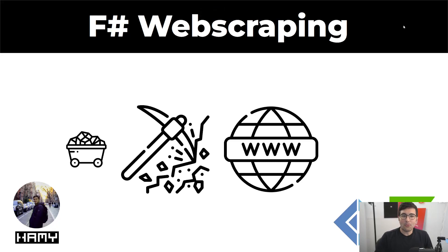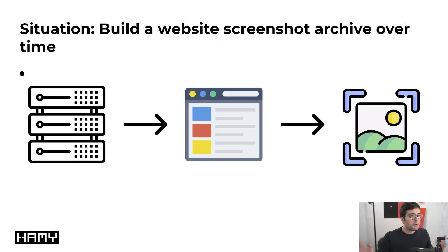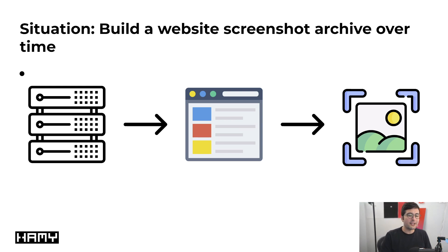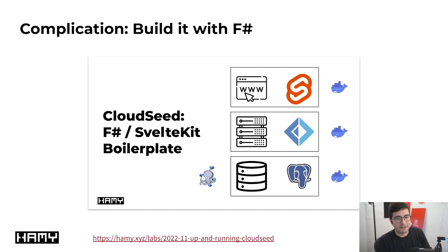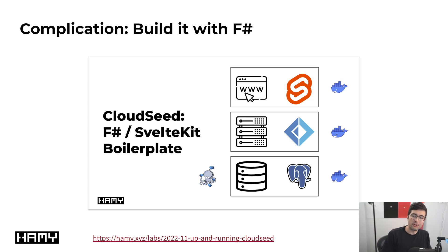Hey everyone, welcome back to lab. In this video, we're going to be talking about web scraping with F-sharp and Selenium. Basically, I wanted to build an archive of screenshots of a website over time, which involves setting up some project code, going to the website, and automatically saving off those screenshots. I wanted to build this with F-sharp. I use CloudSeed for basically all of my starting projects, which runs F-sharp on the back end. So if I want to build some kind of ad hoc business logic, I like to keep it in the same technology.